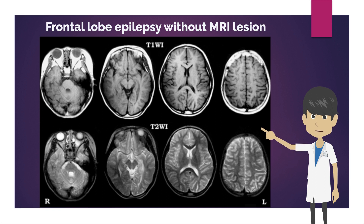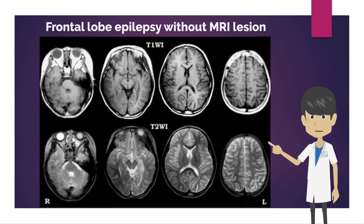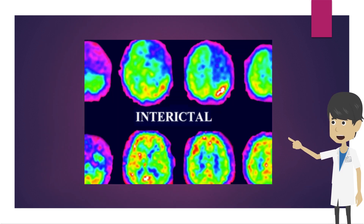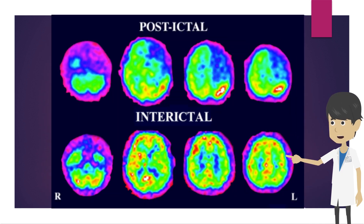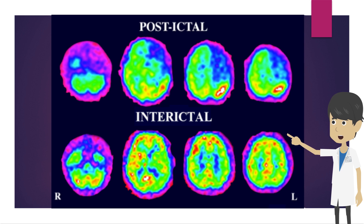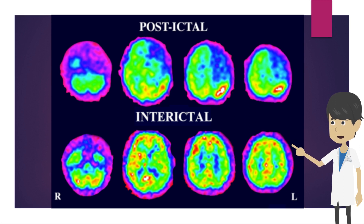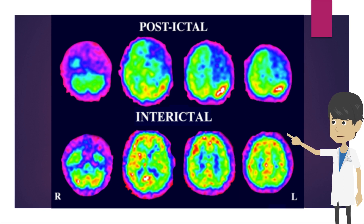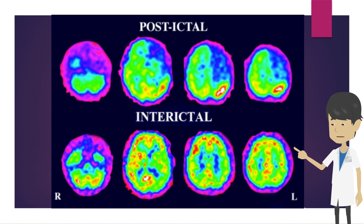This is a case of frontal lobe epilepsy without any abnormalities seen on MRI. In the interictal phase, there is a broad decrease in perfusion from the left frontal lobe to the temporoparietal lobe. A few minutes after the seizure, there was a wide area of hypoperfusion in the left frontal lobe. In this case, brain perfusion during the seizure could not be captured because of the delay in the injection of brain perfusion tracer.